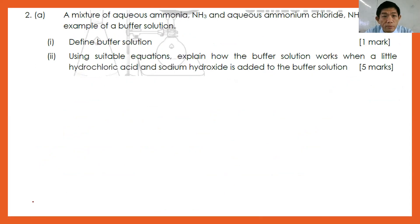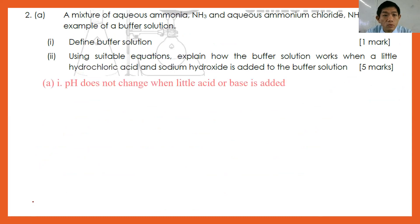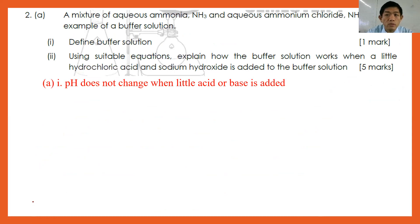Moving to question number two: a mixture of aqueous ammonia NH3 and aqueous ammonium chloride NH4Cl is an example of a buffer solution. Number one: define what is a buffer solution. A buffer solution is a solution where the pH does not change much when a small amount of acid or base is added. Number two: using suitable equations, explain how the buffer solution works when a little hydrochloric acid and a little sodium hydroxide are added.